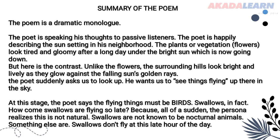Here is the contrast: unlike the flowers, the surrounding hills still look very bright and lively because they are glowing against the falling sun's golden rays. The sun is setting in the west — the east will have a dull look, but the west will have a beautiful look because the golden rays are reflecting on the mountains and hills. The poet suddenly asks us to look up into the sky, wanting us to see the things flying up there.